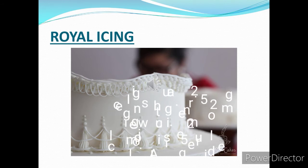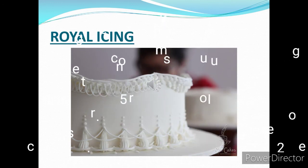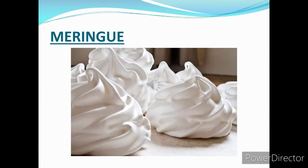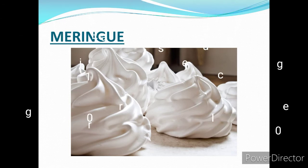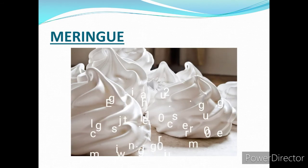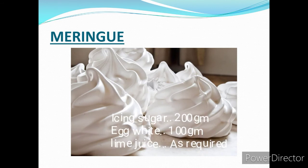Royal icing is often confused with meringue. Meringue and royal icing look similar, but royal icing is a little looser than meringue. Meringue is made with icing sugar and egg white along with lime juice — though lime juice is optional depending on the chef. Icing sugar and egg white are used in a ratio of two to one. To make meringue, simply beat together icing sugar and egg white till you get stiff peaks.